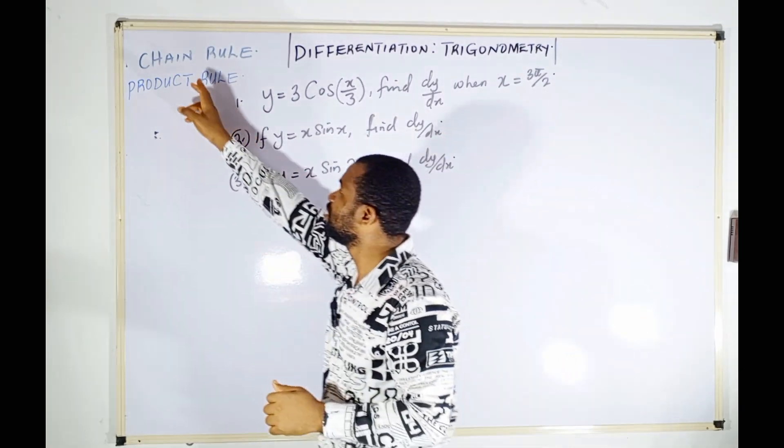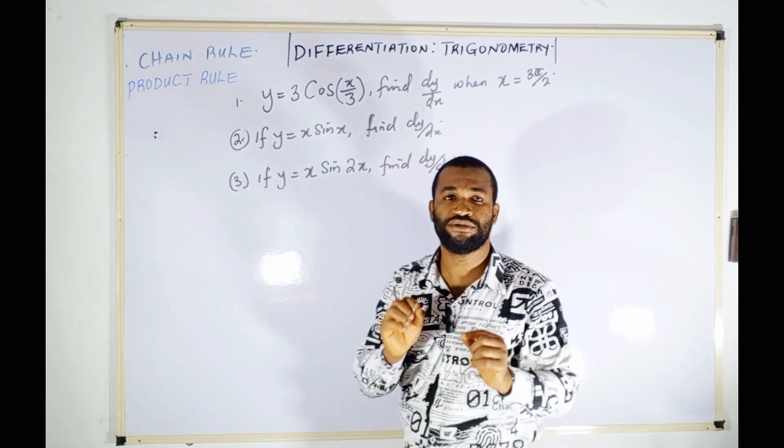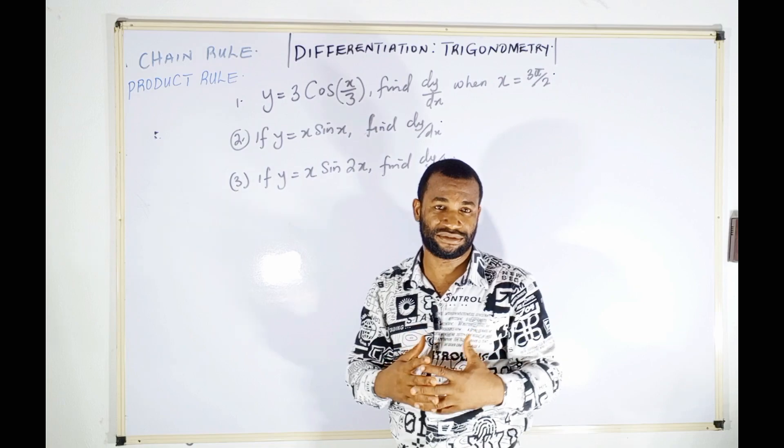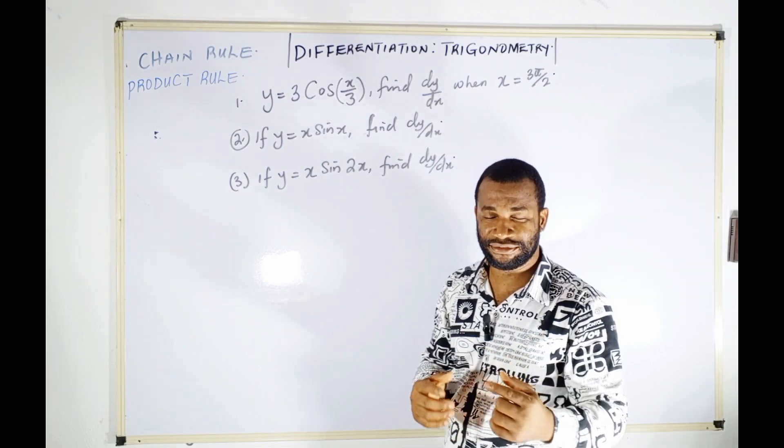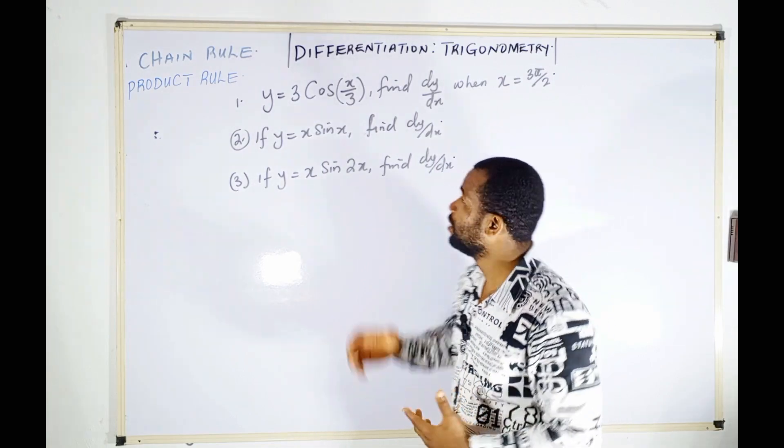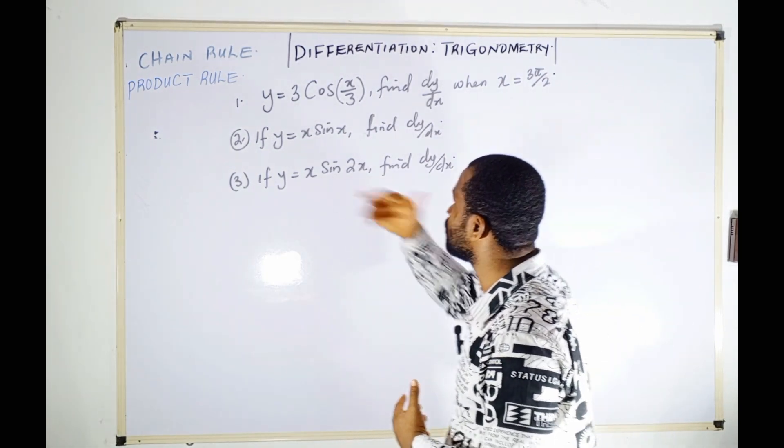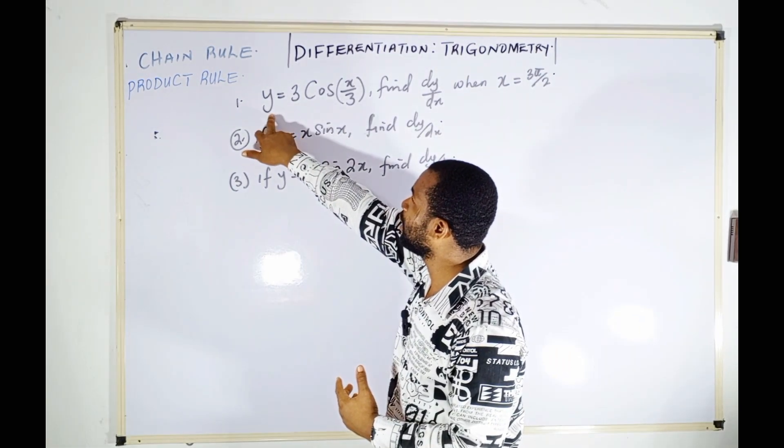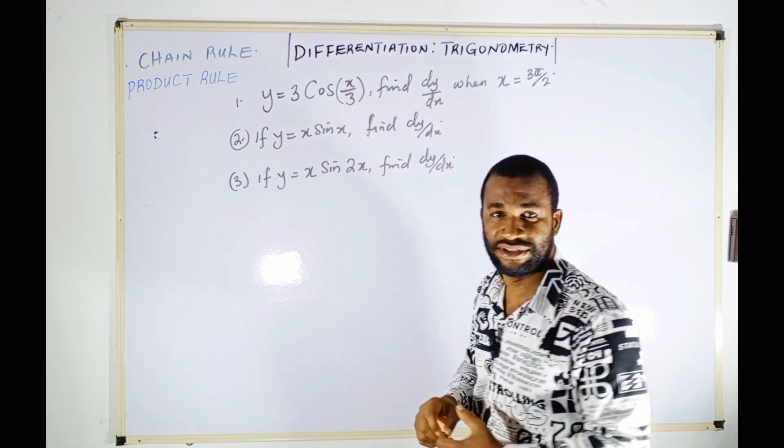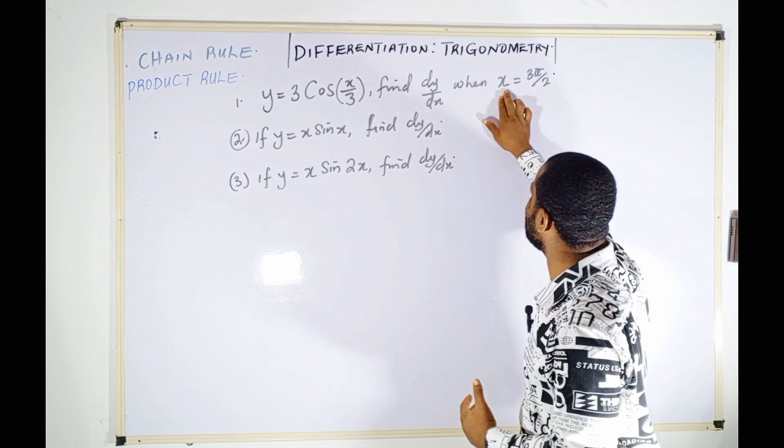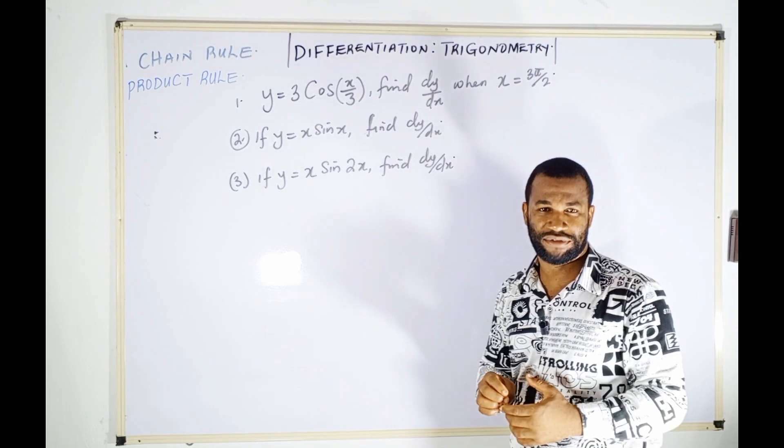Remember, I'm going to use either chain rule or product rule, and I'll tell you why before using them. But don't forget to hit the subscribe button, like, and share. The first question: y = 3cos(x/3), find dy/dx where x = 3π/2.